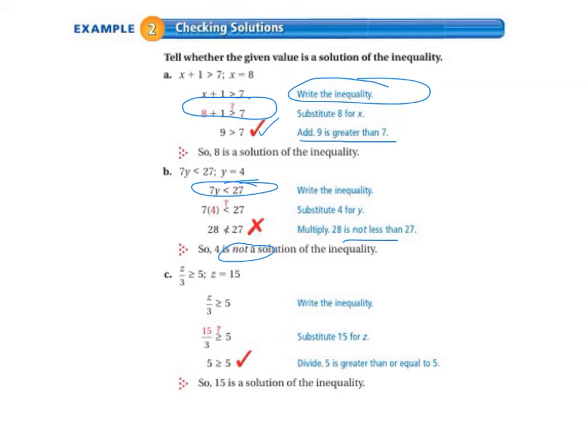Continuing on with letter C, Z divided by 3 is greater than or equal to 5. Z equals 15. So we write the inequality and we substitute 15 for Z. And we have 15 divided by 3 is greater than or equal to 5. So we're trying that out. And we substitute in the 15 for Z, and we get 5 when we divide. And 5 is greater than or equal to 5. So 15 is a solution of the inequality.